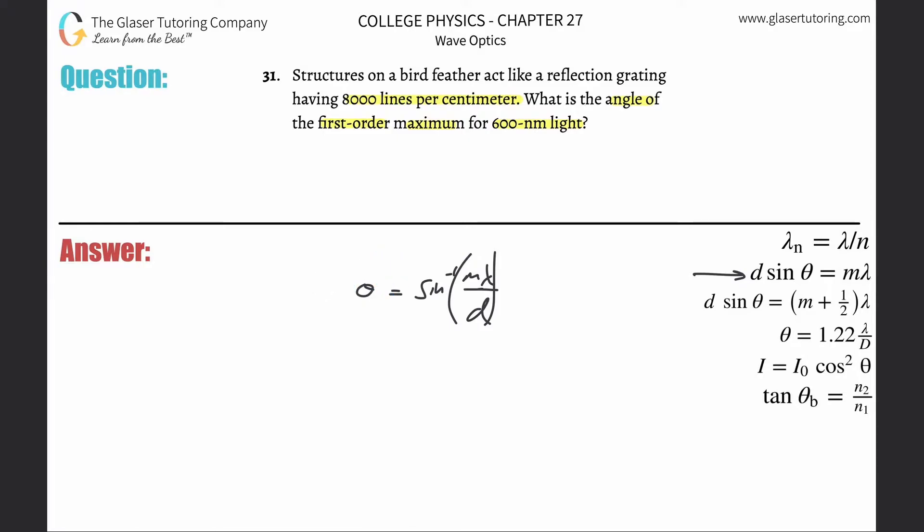Now, in order to answer the question, we need to know the distance between the slits, not the number of slits, or basically lines per centimeter. So, what we essentially have to do here is we're going to take the inverse of this value. So, essentially what I'm writing now is one centimeter for every single 8,000 lines.